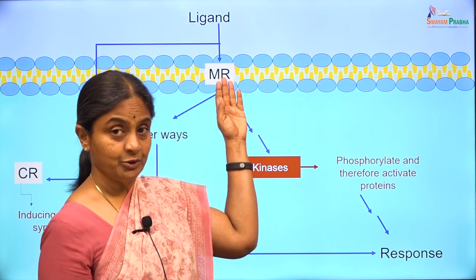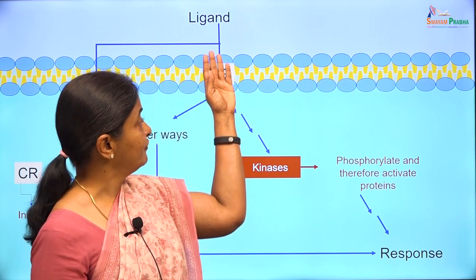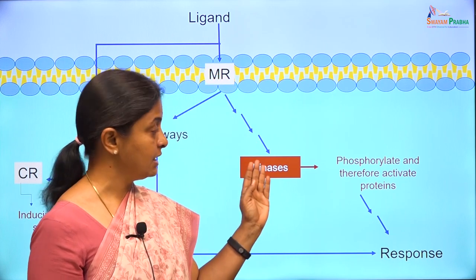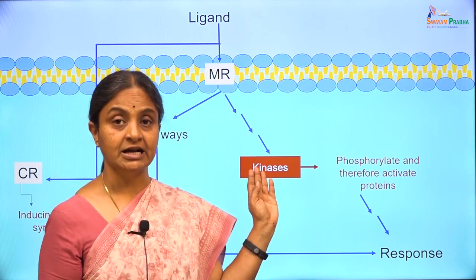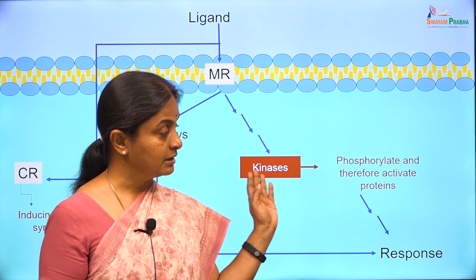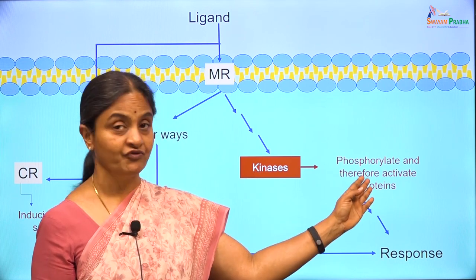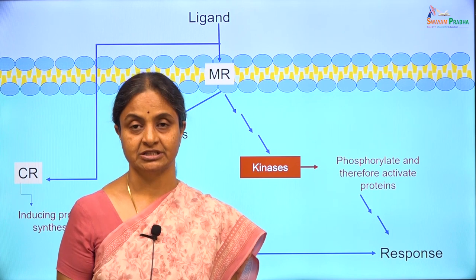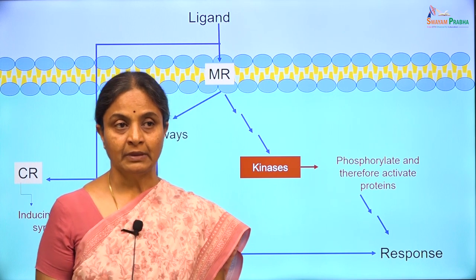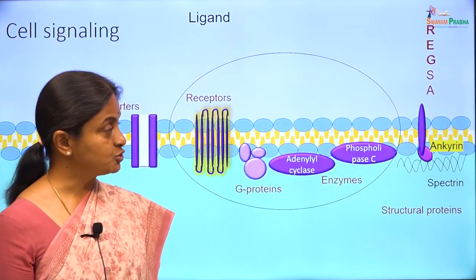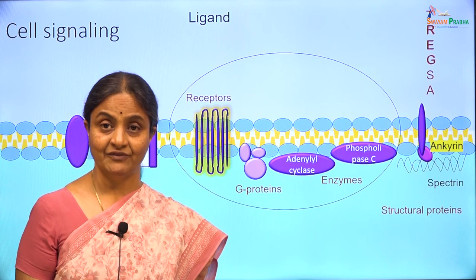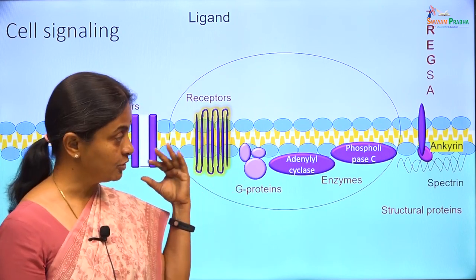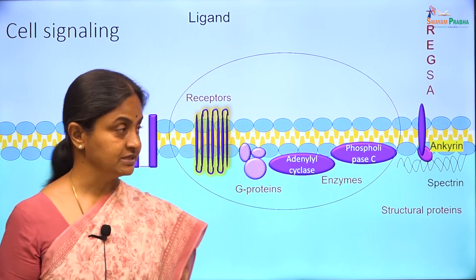One set of pathways would involve the ligand-membrane receptor combination activating certain kinases within the cell. The kinases would phosphorylate certain proteins and those would bring about responses. We will link this to an earlier slide considered in the very first lectures — a slide on membrane proteins.